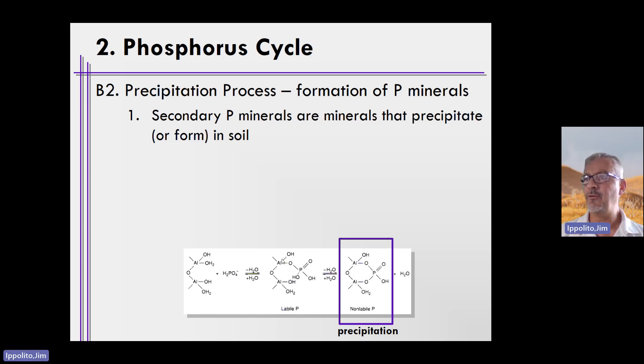If the reaction continues to the right, phosphate forms not just one bond like it has under the labile phase, but it forms two bonds with the edges of these aluminum hydroxide phases or minerals. Two bonds are very strong, and this is known as mineral precipitation. So we're going to talk about mineral precipitation for a few minutes.